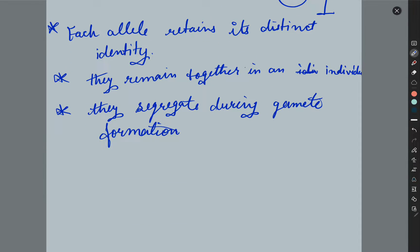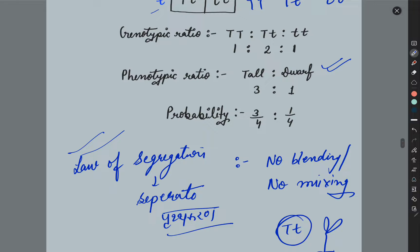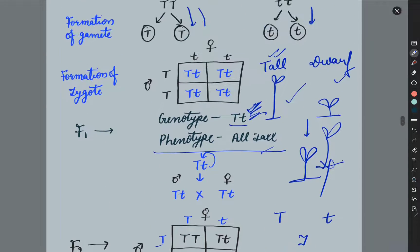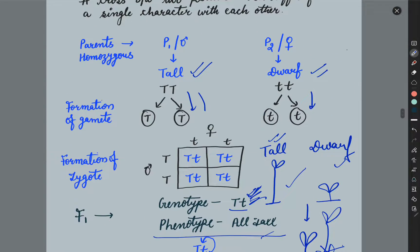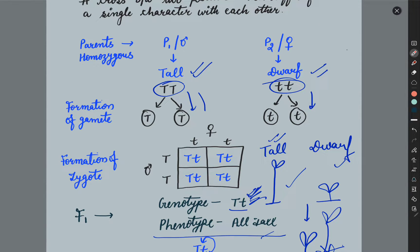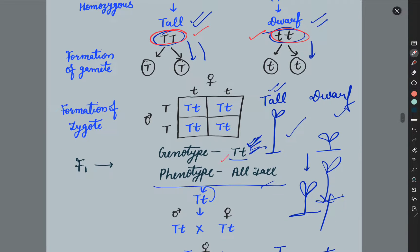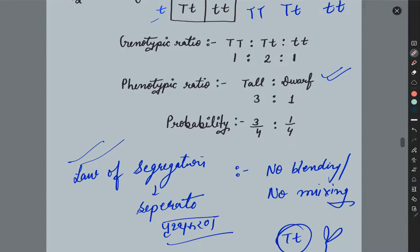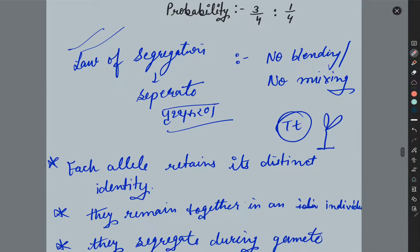It is also called the Law of Purity of Gametes. What do we need to keep in mind about the law of segregation? Each parent has two copies of the allele present. These can be in a homozygous or heterozygous condition. The recessive trait is not expressed, but it is not lost — there is no blending, mixing, or loss of identity.